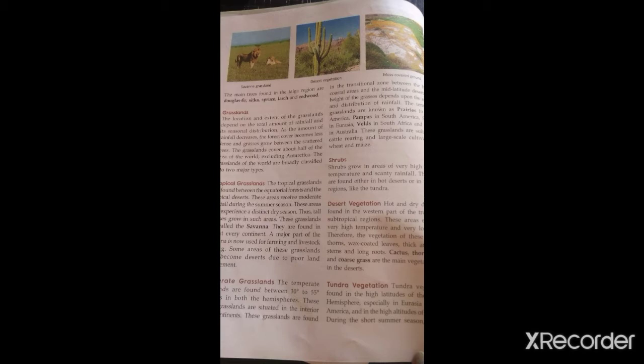Page number 130 — Grasslands. The location and extent of grasslands depends on the total amount of rainfall and its seasonal distribution. Underline two points: rainfall and seasonal distribution. How much rainfall happens and when it happens across the season matters. Even if heavy or moderate rainfall occurs, if it only happens one or two months in the year, there will be no forest. A good consistent rainfall is needed for forest. Both location and extent of grassland depend on rainfall and seasonal distribution.